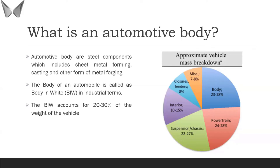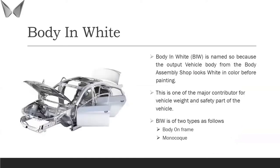The automotive body accounts for almost 25 to 30 percent of the weight of the entire vehicle. For example, in a recently launched XUV 700, around 25 to 30 percent of the entire car's weight is made up of BIW — Body in White. Even in a bike, the metal frame accounts for 25 to 30 percent of the bike's weight. So each and every automotive product has a body that accounts for 25 to 30 percent of its weight.